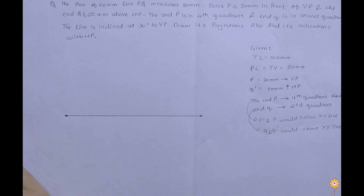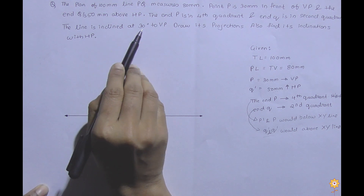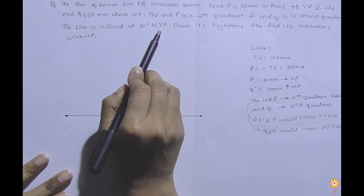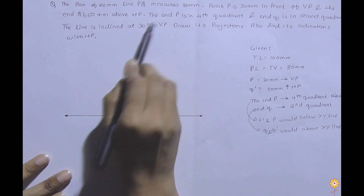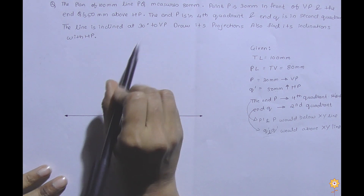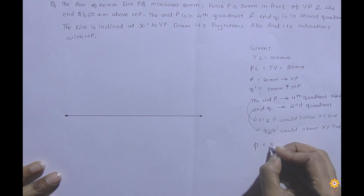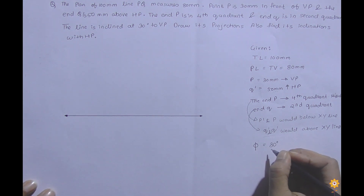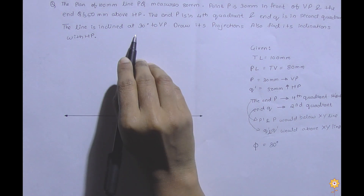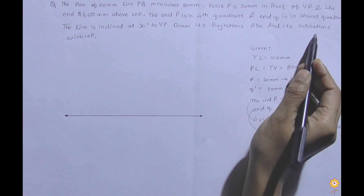The line is inclined at 30 degrees to VP. An angle related to VP is related to the top view, and it is directly an inclination with VP, so it would be a phi angle. So phi is 30 degrees, which will give us the true length. Now draw its projection and find its inclination with HP.